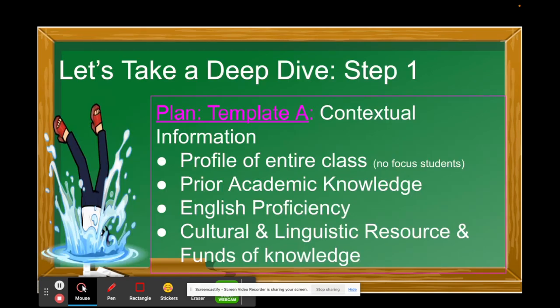The rationale of how you use data to make informed decisions is what Step 4 is all about. Now let's take a deep dive into Step 1. Step 1 begins with Template A. If you haven't already checked out all the templates provided, definitely do that — pull it up, press pause, and let's go through this together. In Template A — Plan — you provide contextual information, which really means they want to know who your students are and what these kids bring into the classroom.